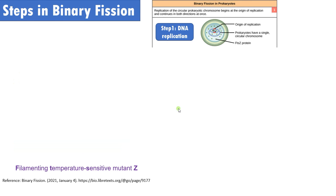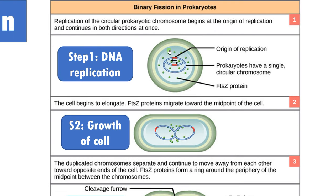Let's move into the steps in binary fission. The first step in binary fission in prokaryotes is DNA duplication or DNA replication. In prokaryotes, the DNA is double-stranded and circular. Replication begins at specific sequences called origin of replication, or ORI, and continues in both directions forming a replication eye. A special protein involved in binary fission is called the FtsZ protein.